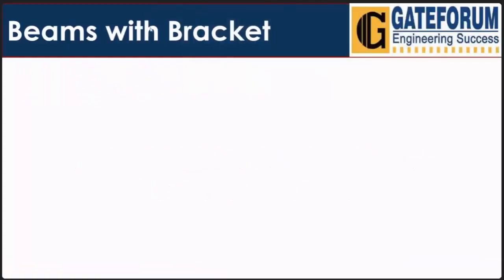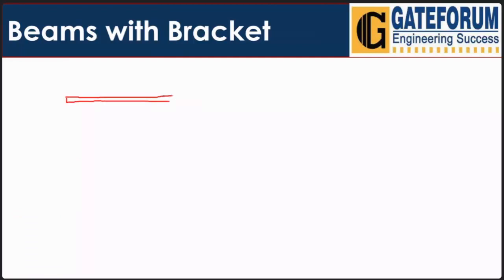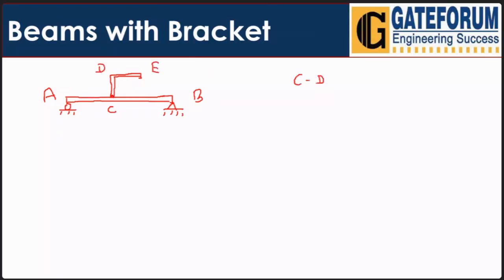First, let's understand what we mean by a bracket on a beam. Suppose we have a simply supported beam from A to B, and there is an extra portion attached to this beam. That extra portion — here from point C, D to point E — is known as the bracket. So CDE is the bracket.